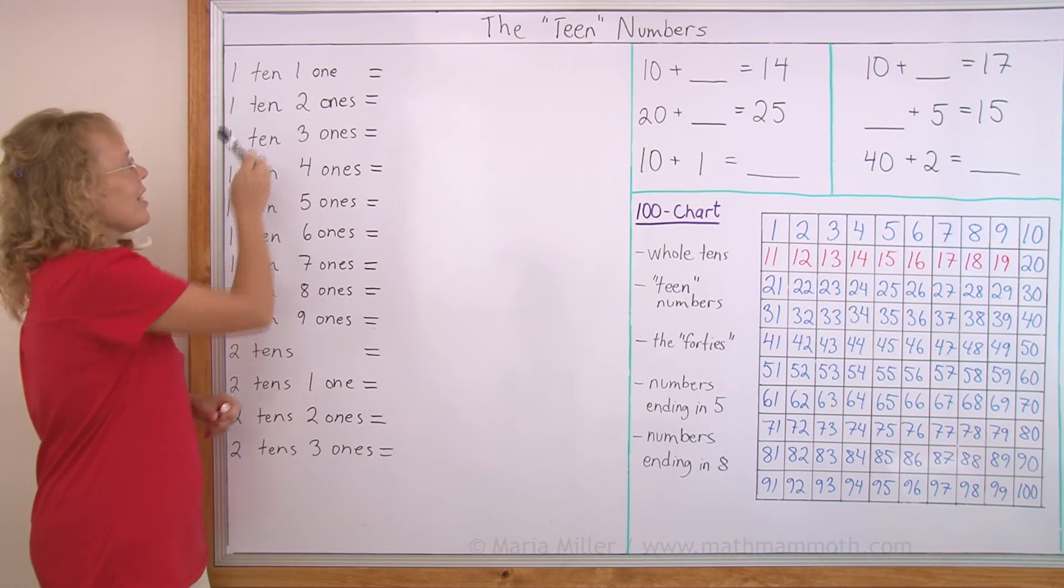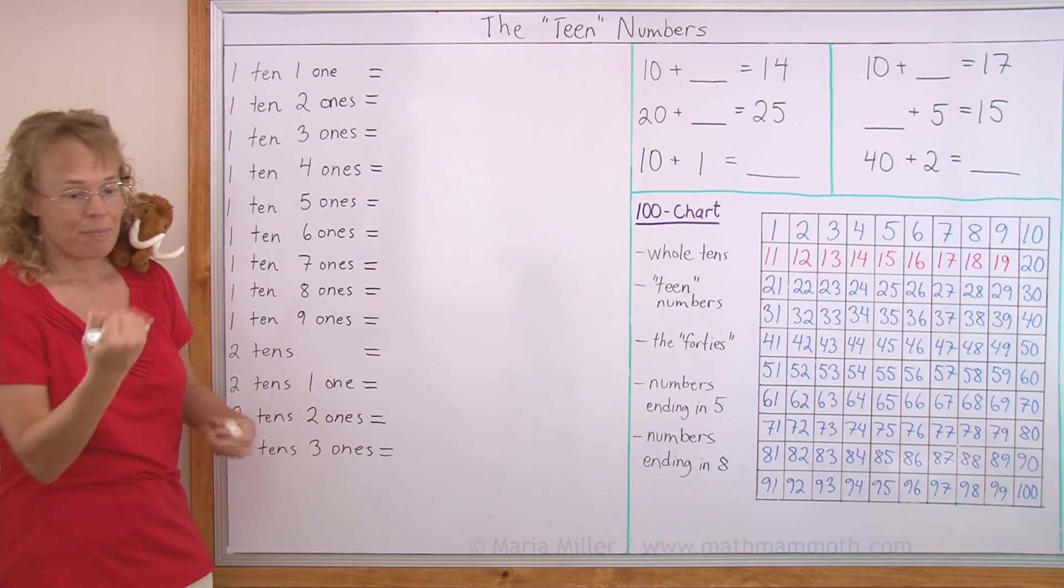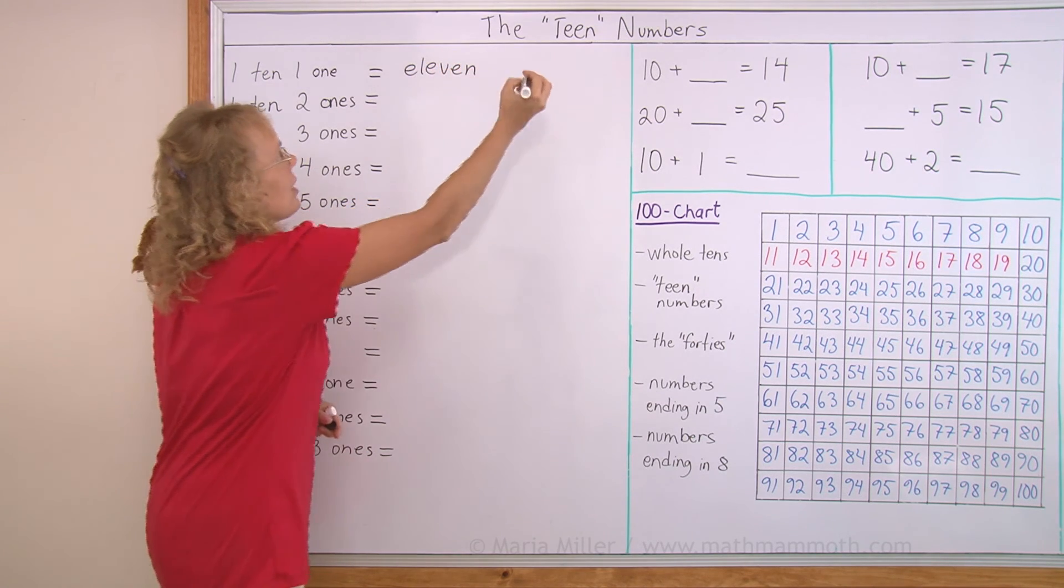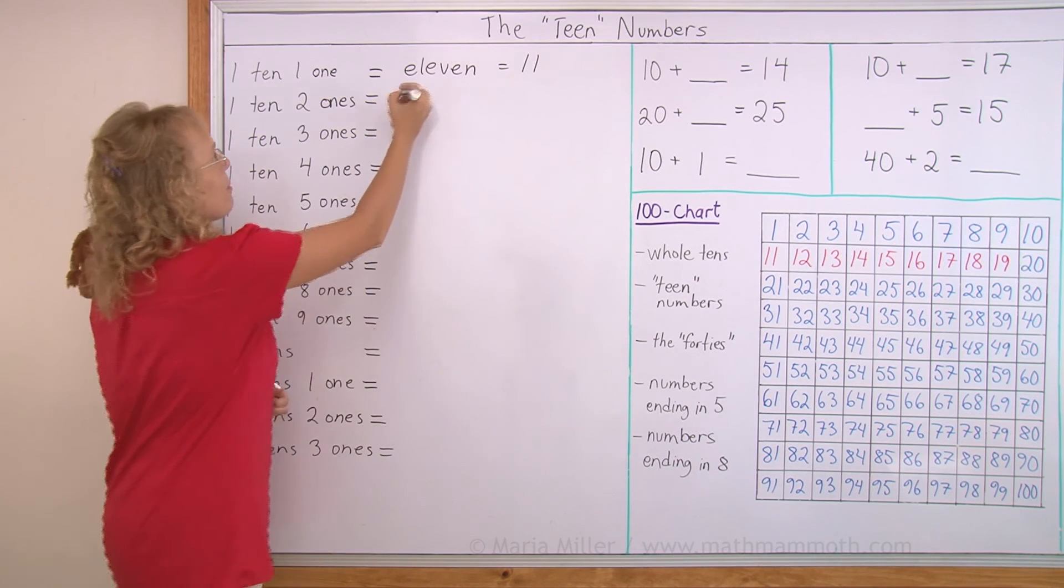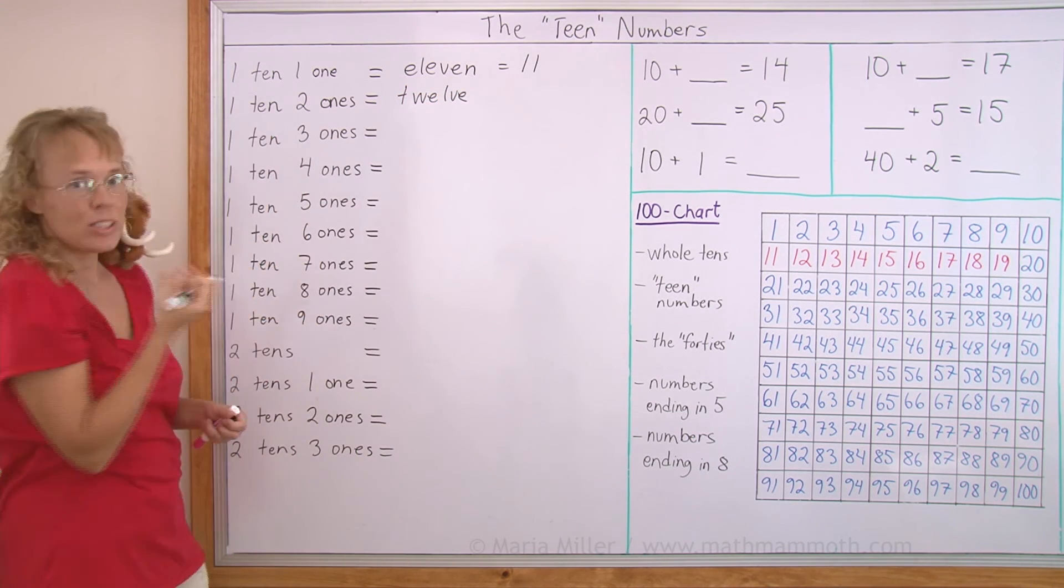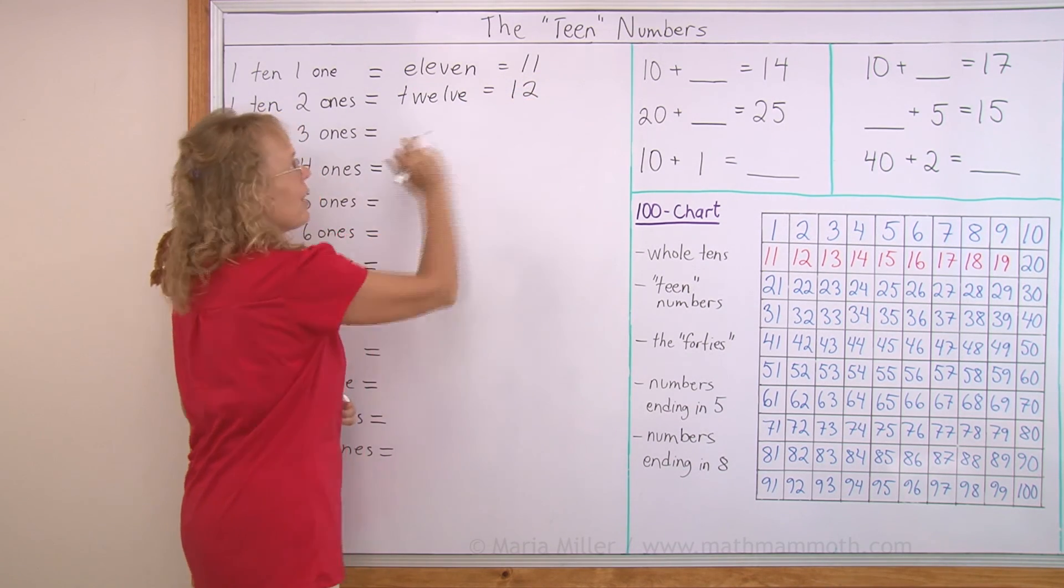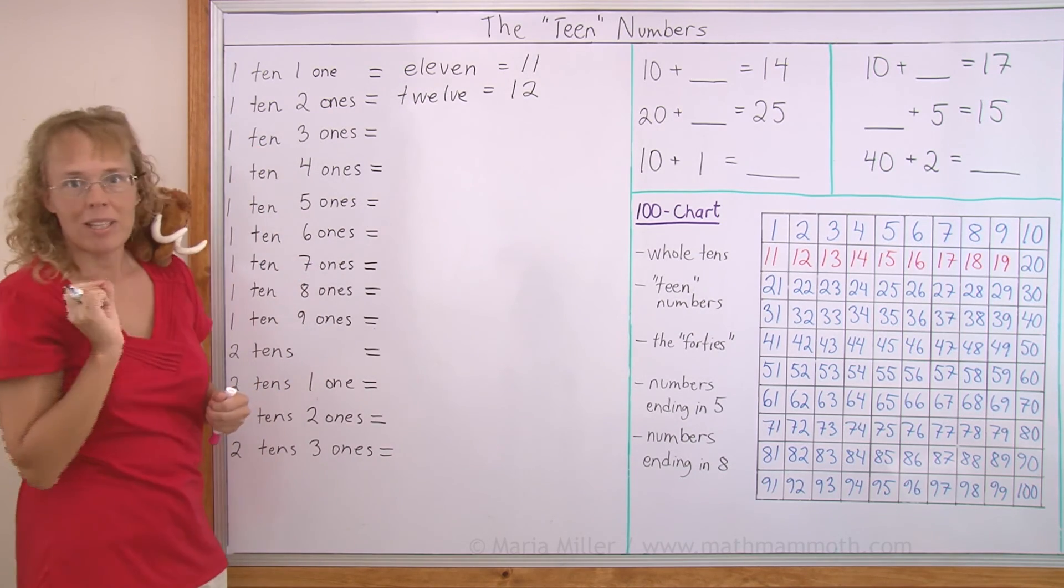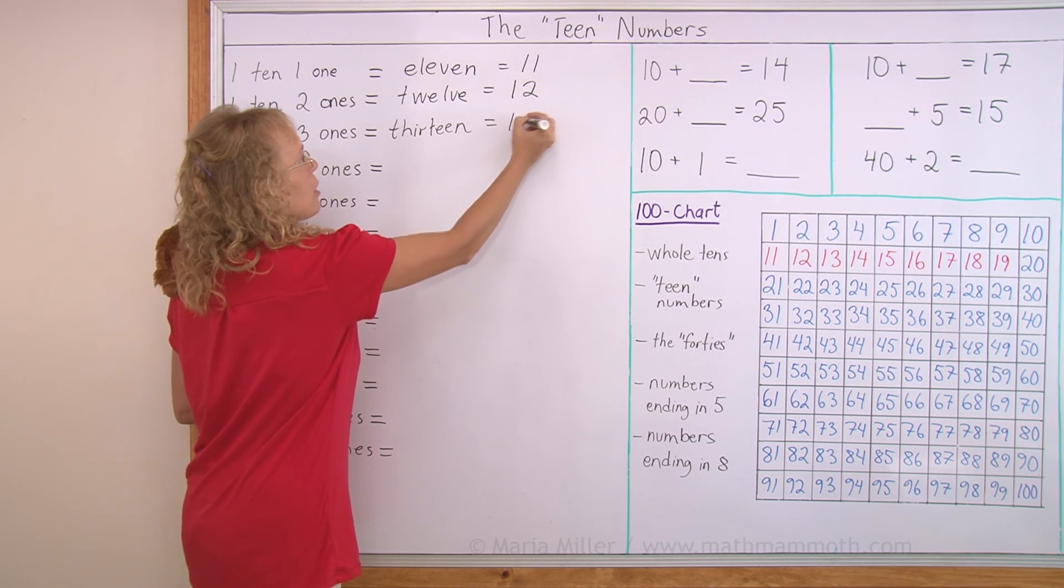We have one 10, and then the next number, one 10 and one 1 would be 11. And we write it as 1 and 1 like that. And then the next one, 12. 12 is 1 ten and 2 ones, and that is 1 2, 1 ten and 2 ones. And then we come to the teen numbers. 1 ten and 3 ones is 13. We write it as 1 3.